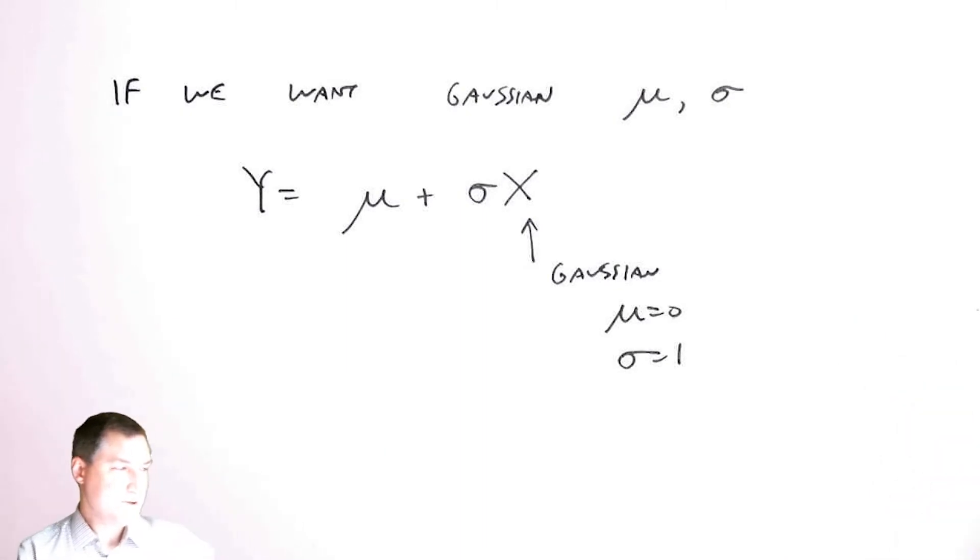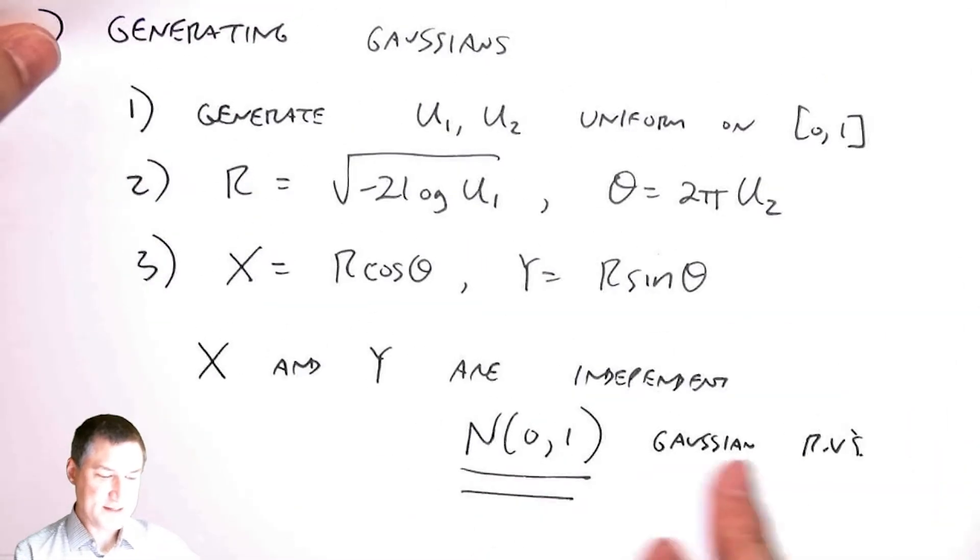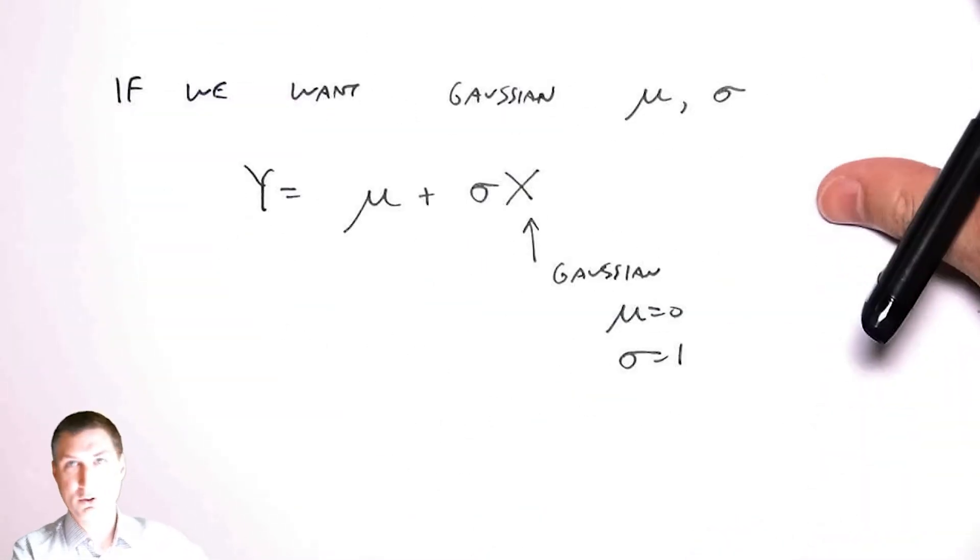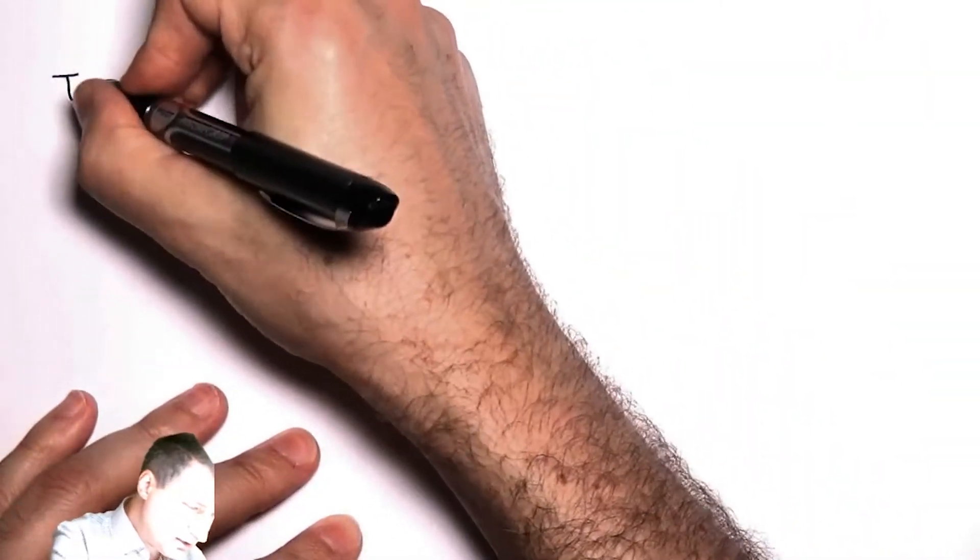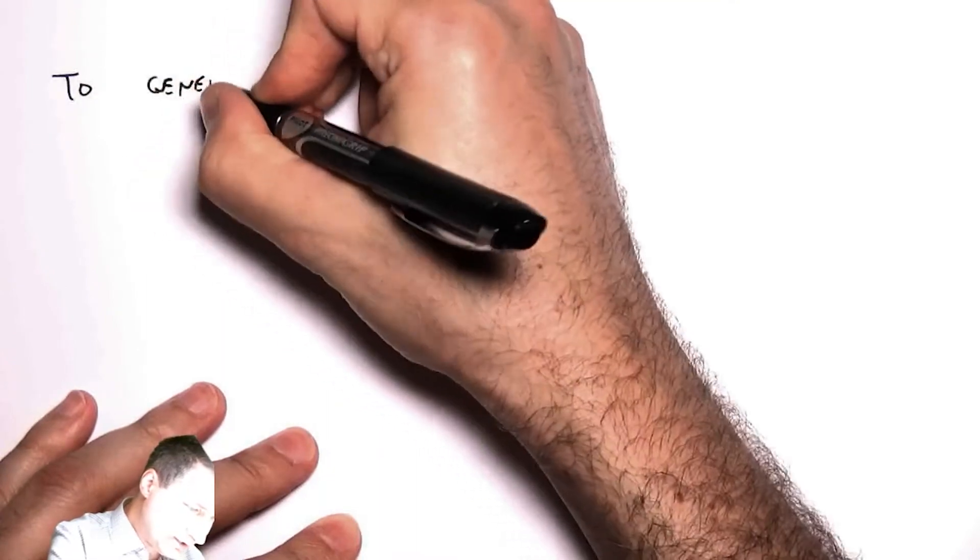The last thing I'll say is suppose that for some reason, instead of wanting independent random variables, I wanted to have correlated random variables. So to generate correlated random variables.